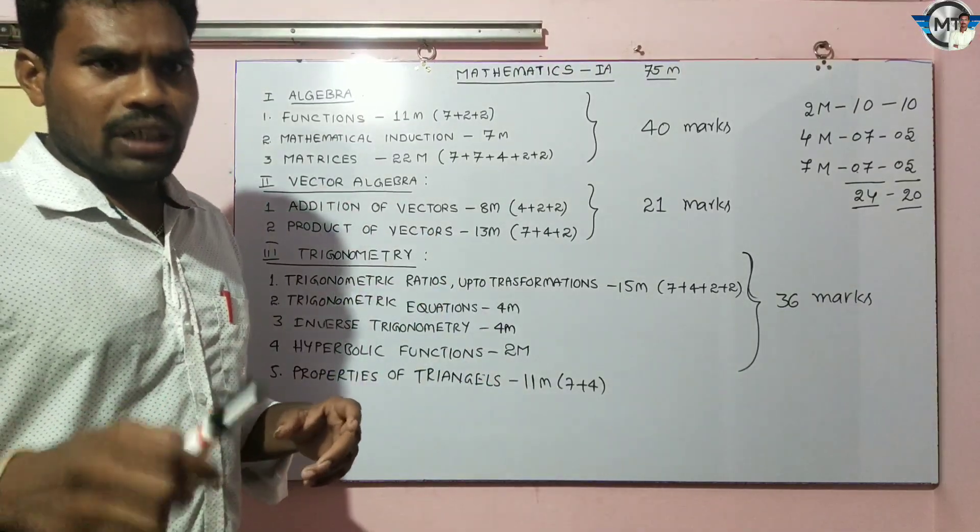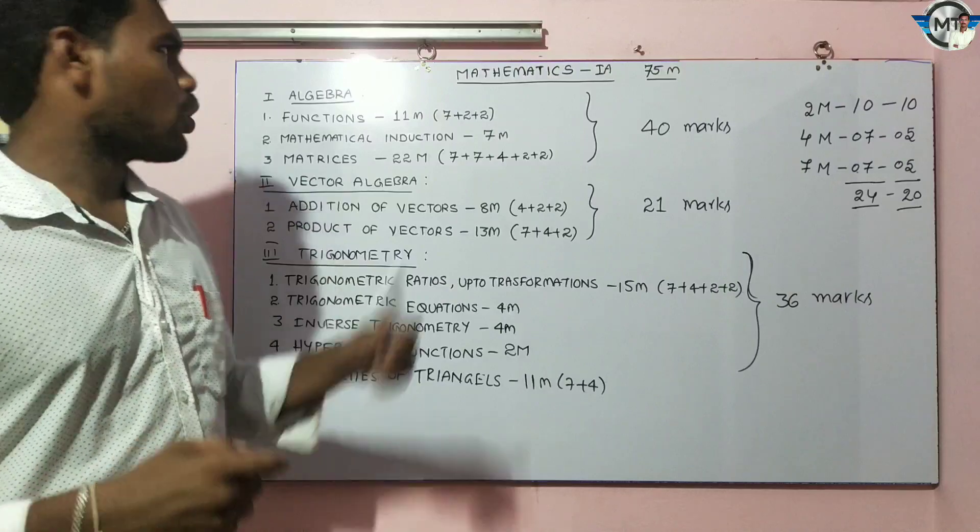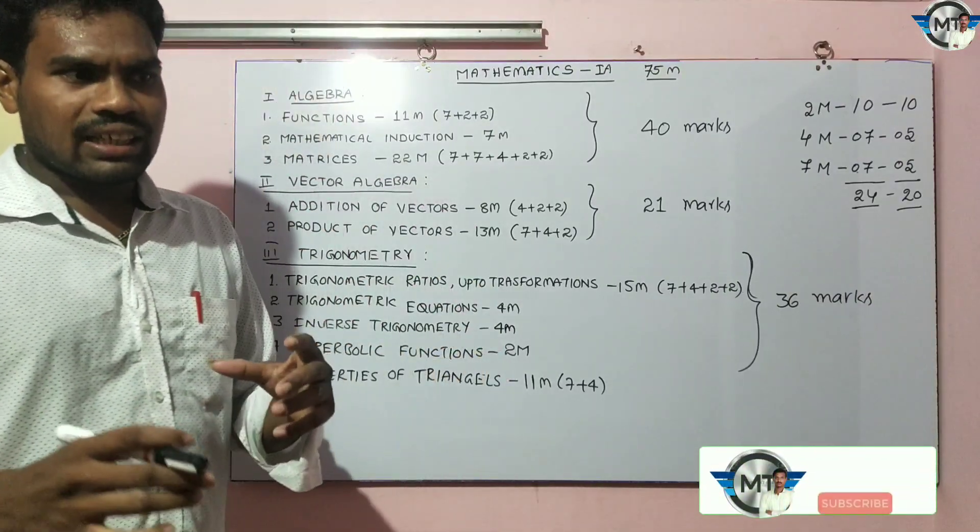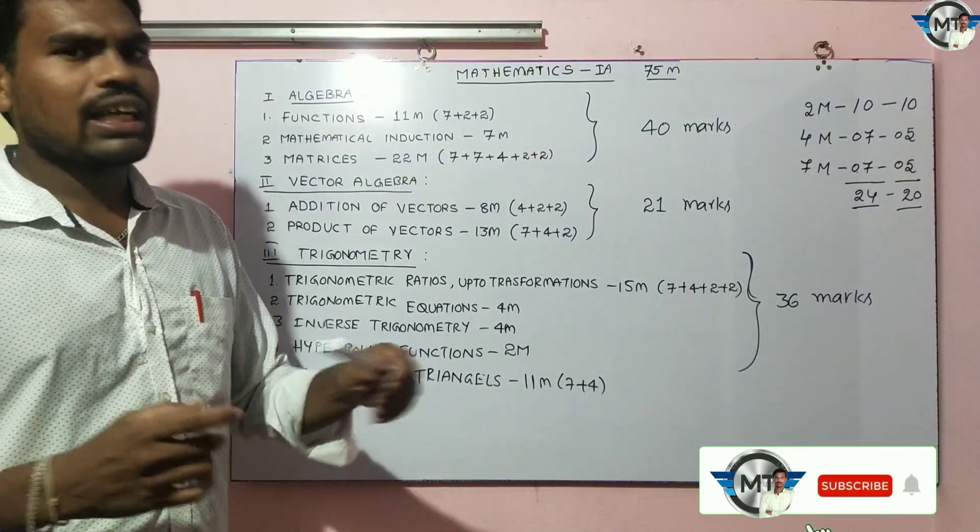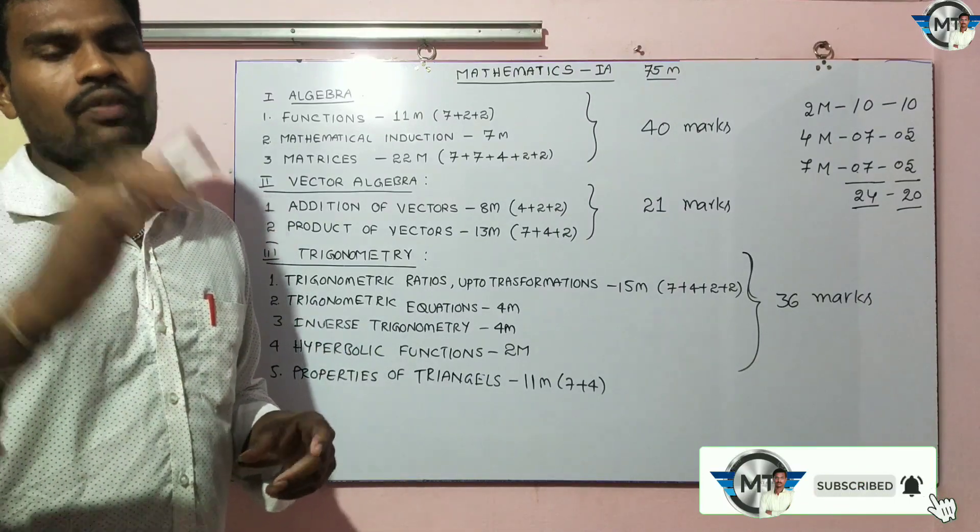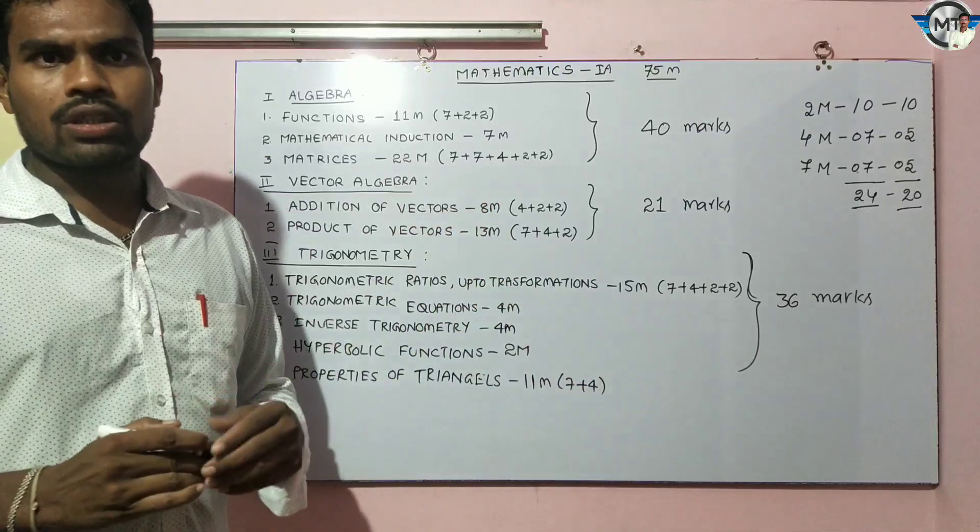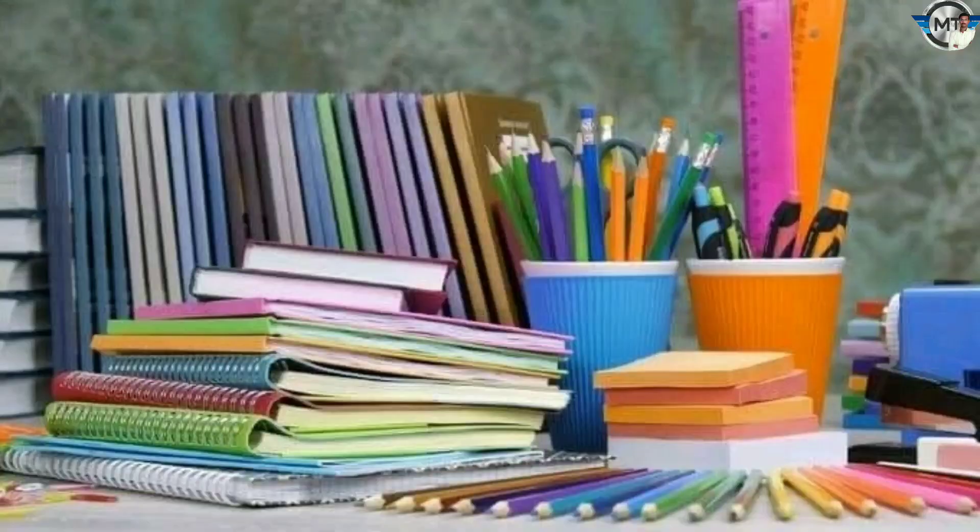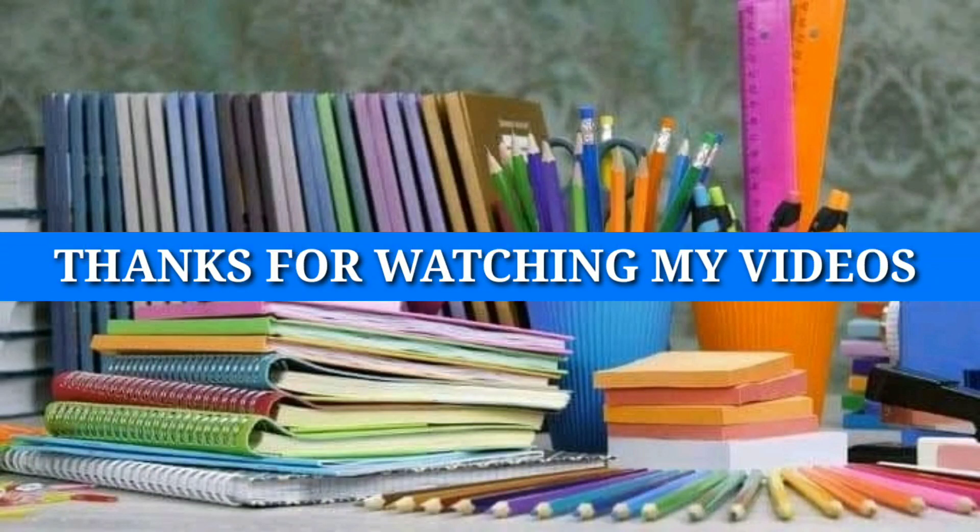The marks distribution includes different question types carrying 2 marks, 7 marks, and other values, all structured to total 75 marks for the complete paper.